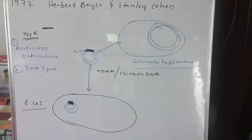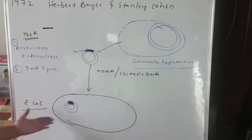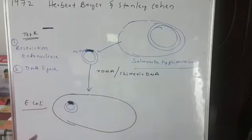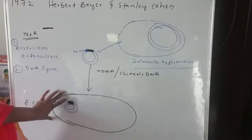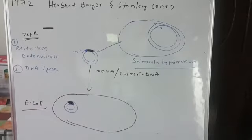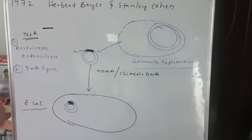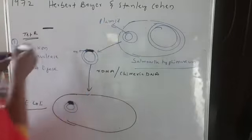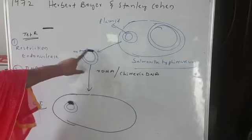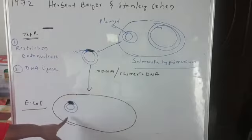E. coli is now transformed, because previously E. coli was not having this R-DNA, but now it has the recombinant DNA in the cell. So it is a genotype change, which means the phenotype will also change. This sort of cell is known as a transformed cell. Now you understand why this plasmid is called a vector — because the plasmid incorporated the desired gene and carried it into the host.